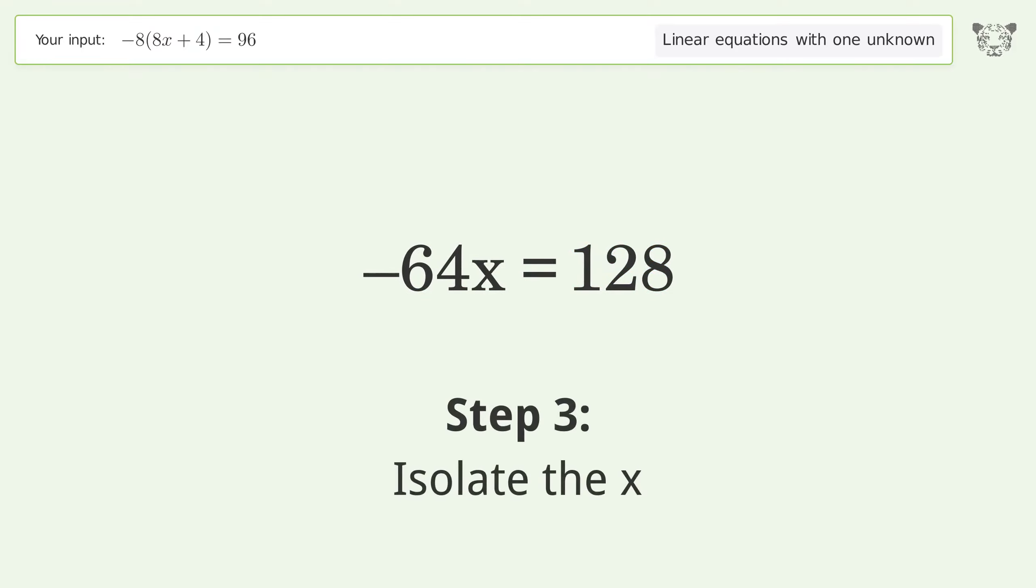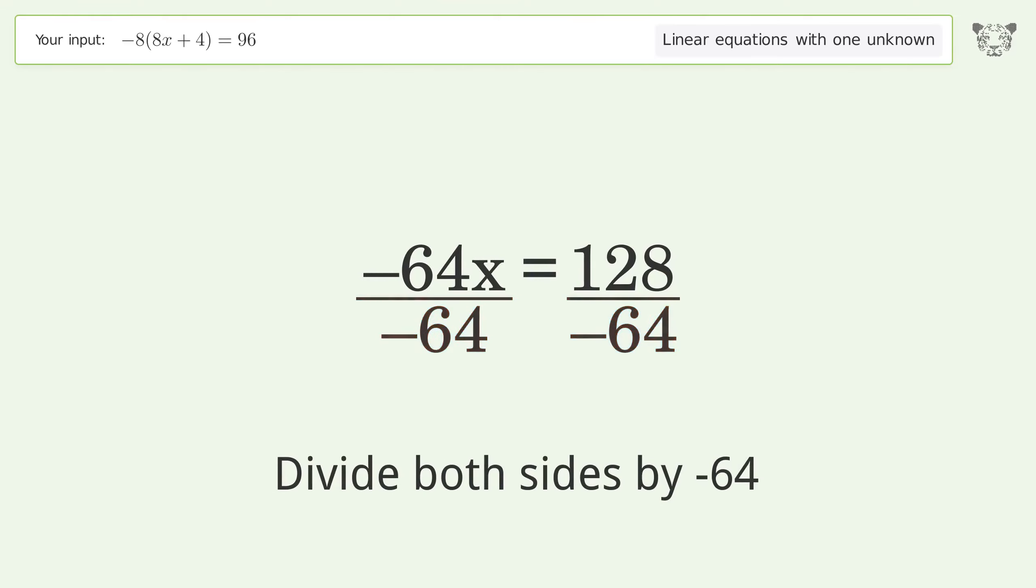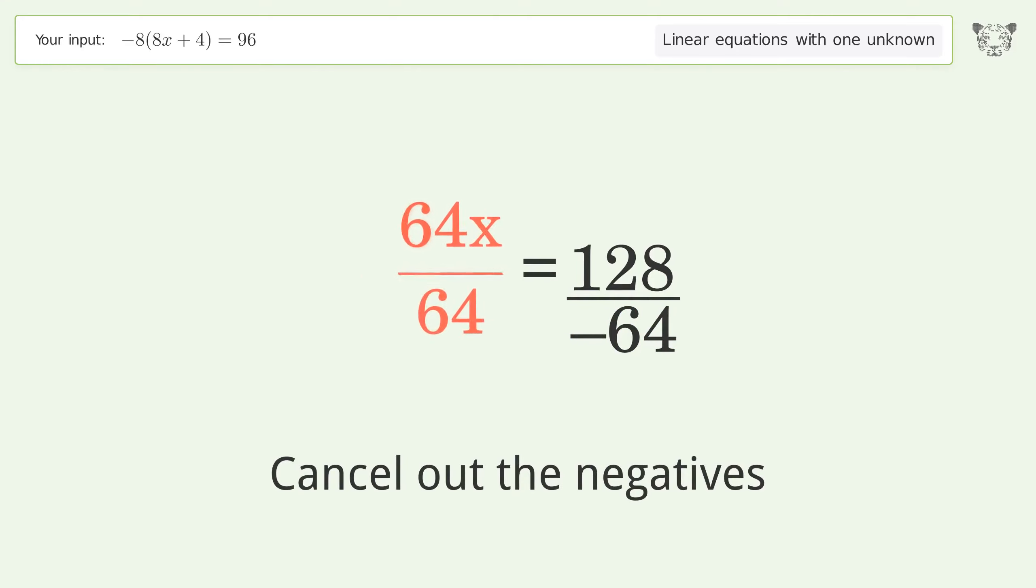Isolate the x by dividing both sides by negative 64. Cancel out the negatives and simplify the fraction.